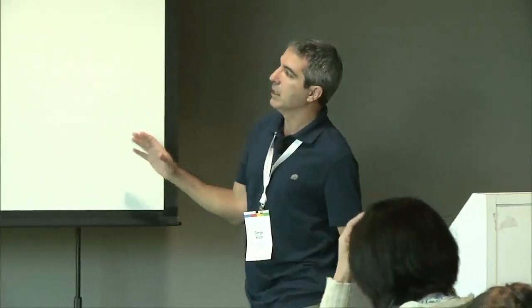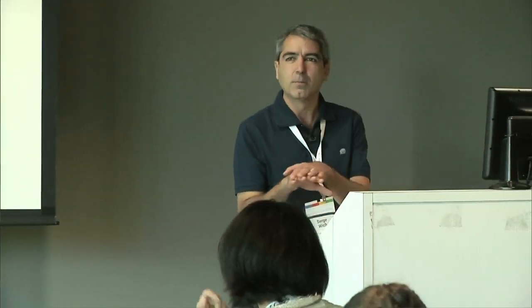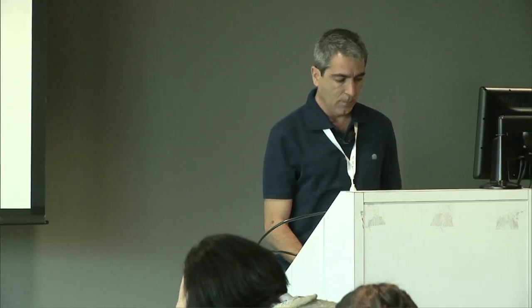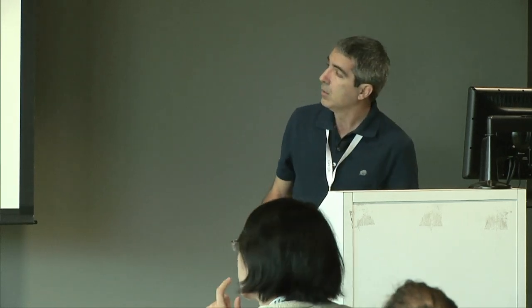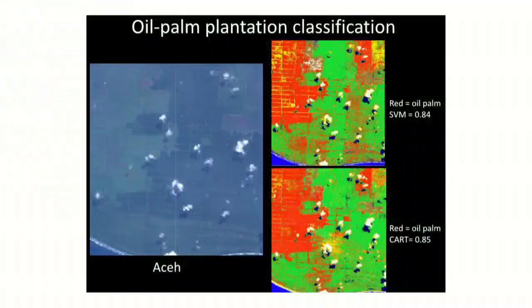This looks a little bit more than it really is, because the Skybox images, as Christian mentioned yesterday in his session, are not completely aligned yet. So there are some areas that are exaggerated. If we look at oil palm and try to classify that from those images — this is a concession in Aceh — it works quite well too.